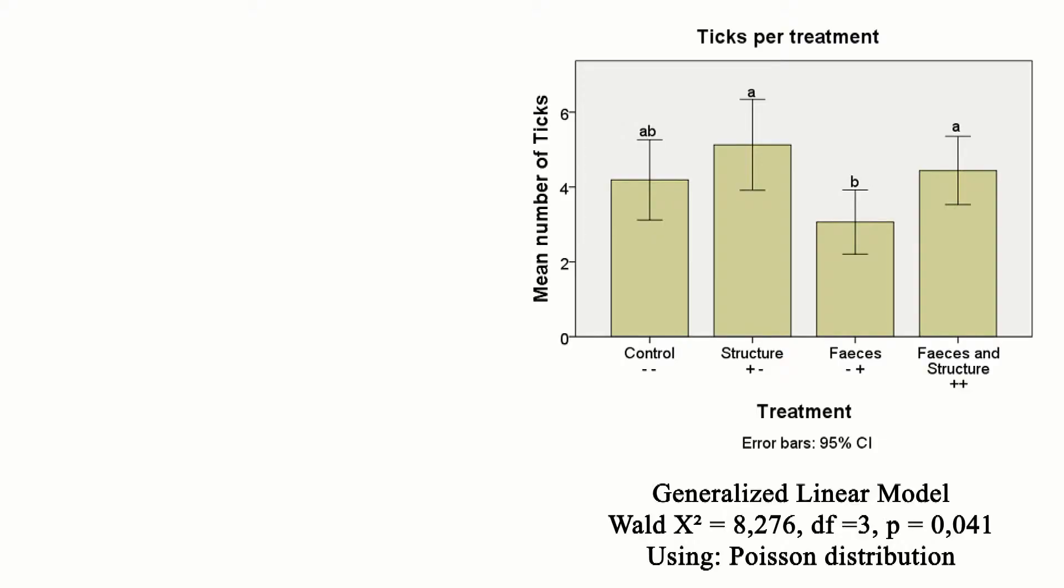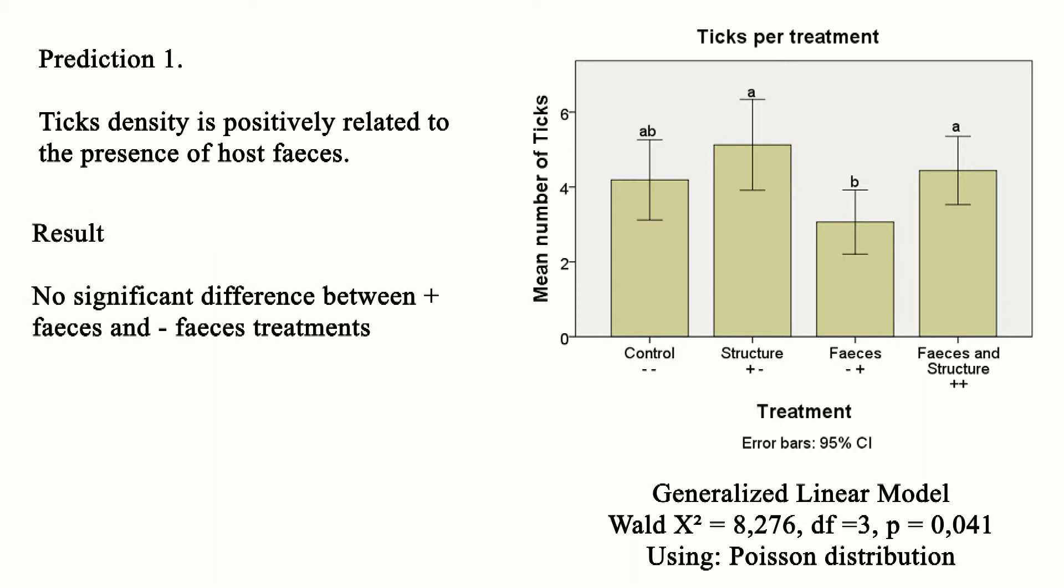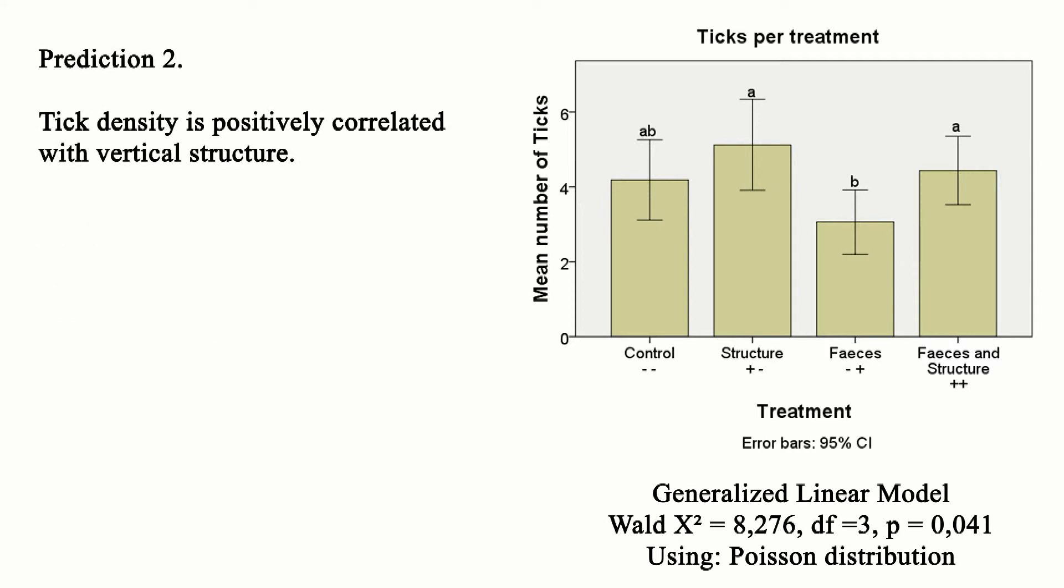The results show that no significant differences between the experimental rounds and blocks were found. There is no evidence that the number of nymphs was significantly higher in the host feces compartments, which implies that our prediction regarding this compartment needs to be rejected. The second prediction, focusing on the relation between nymphs and structure, is partly right.